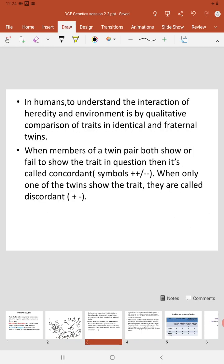The only way to understand the influence of interaction between heredity and environment in humans is by qualitative comparison of traits between identical and fraternal twins. Now you have understood what are identical twins, how they are produced, and what are fraternal twins.